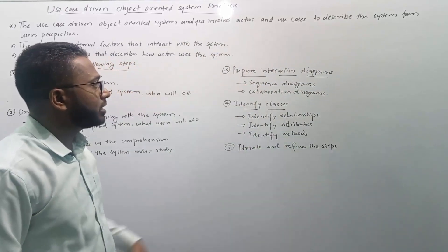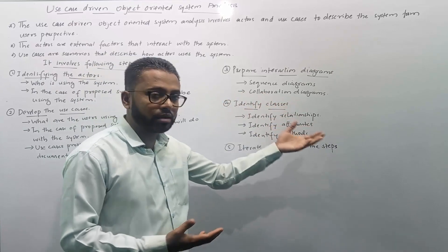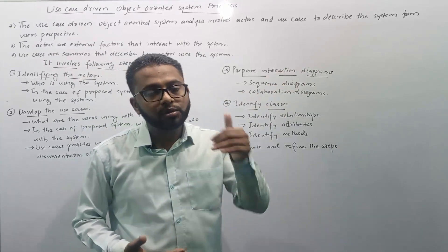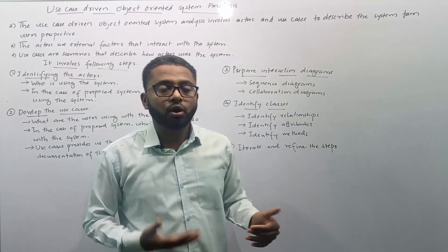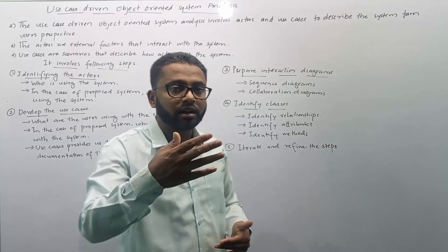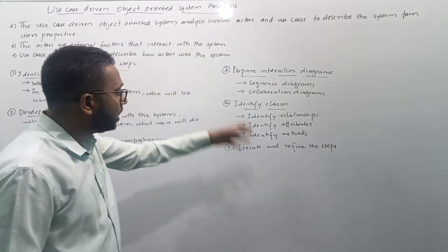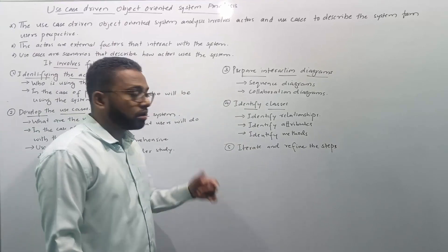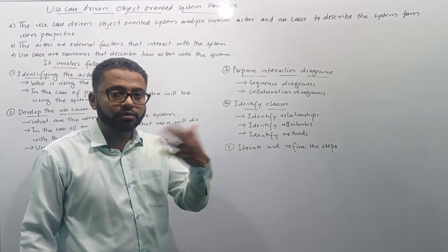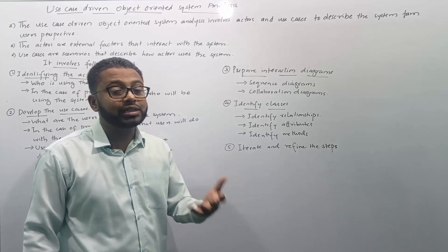The next step is to prepare interaction diagrams. Sequence diagrams and collaboration diagrams both fall under interaction diagrams, and with the help of these diagrams we represent the interaction between the system and the user. After that, we identify classes.